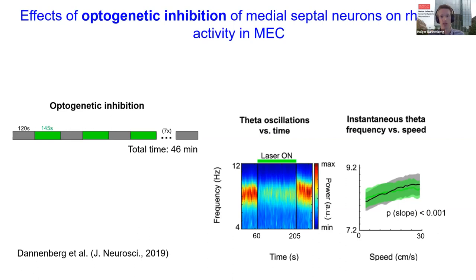The middle figure shows a time-frequency plot where the frequency of local field potential oscillations is on the y-axis and time on the x-axis, with the power of theta oscillations color-coded: red indicating high power and blue indicating low power. You can see that the theta oscillatory power almost instantaneously decreases at the start of laser stimulation for optogenetic inhibition.